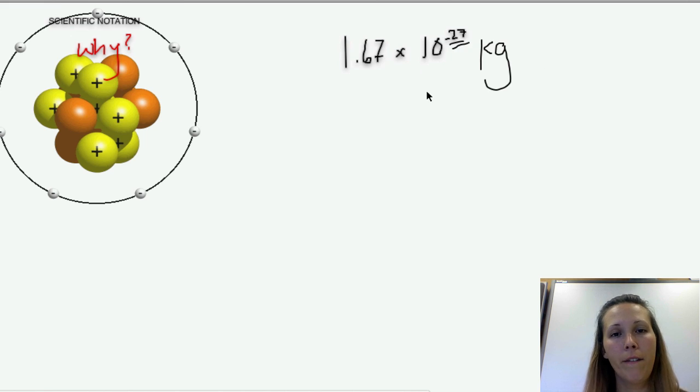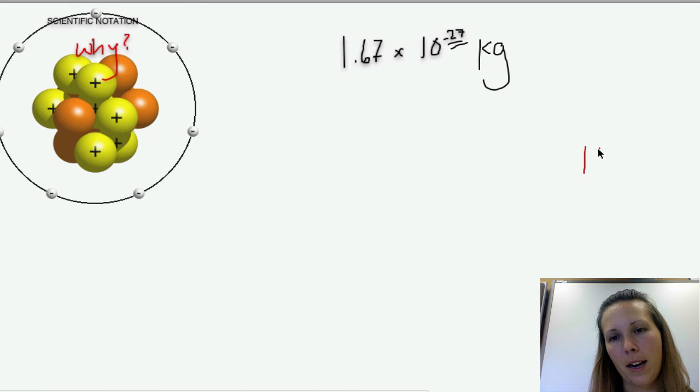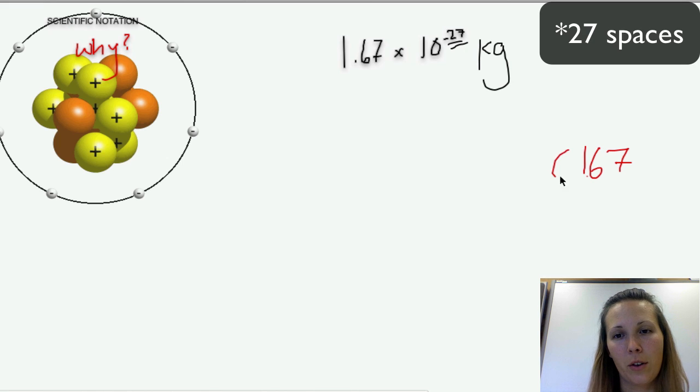So how do we go from scientific notation the other direction? We know that this number is going to be very, very tiny. Start over to the right because we know that this is the number. And this is where our decimal was. So we need to add 27 zeros.